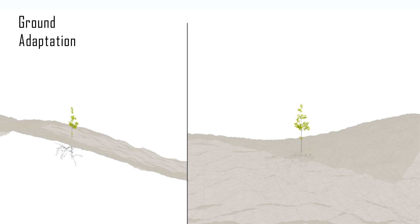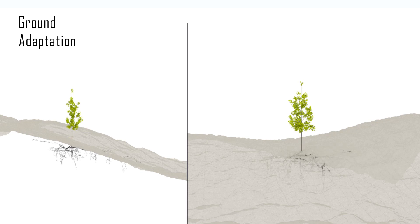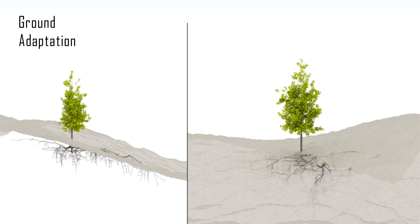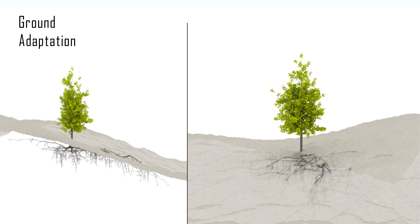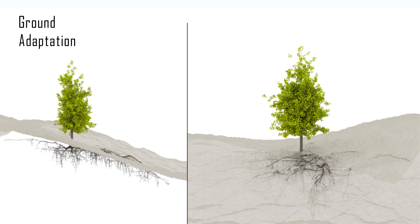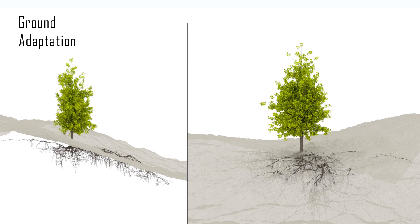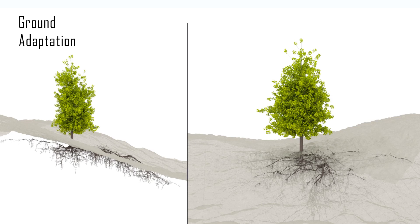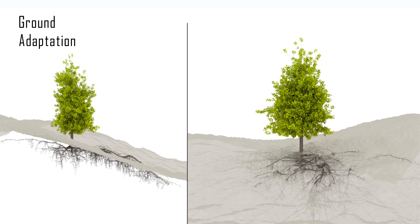Part of the root system in mature trees is always visible due to the erosion of soil or due to growing on the slope of a hill. The realistic rendering of exposed root branches is an important visual asset in outdoor scenes.